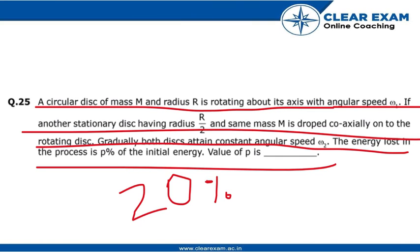So we can say the value of p here is 20. Look at this question - the energy lost in the process is p percent, and we have to find out the value of p. So here the answer is not 20 percent. The answer is just 20.